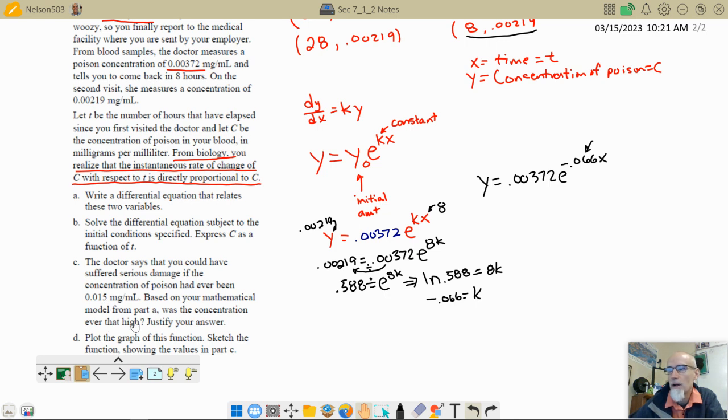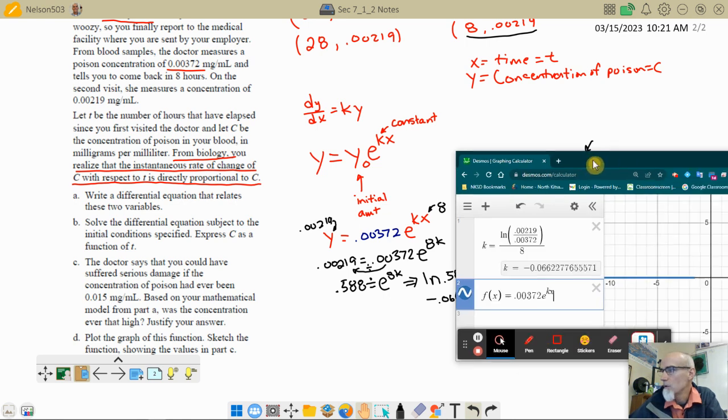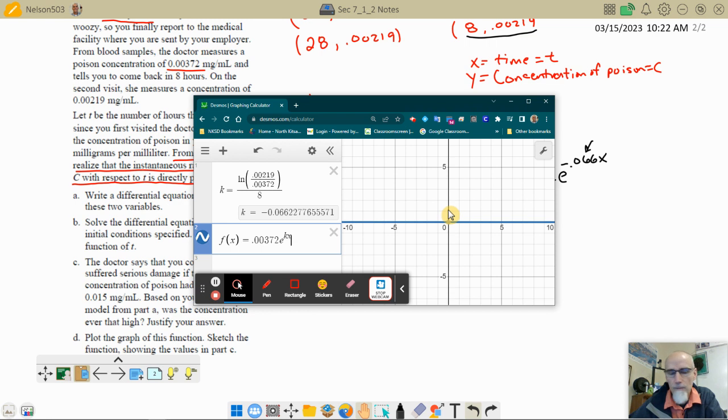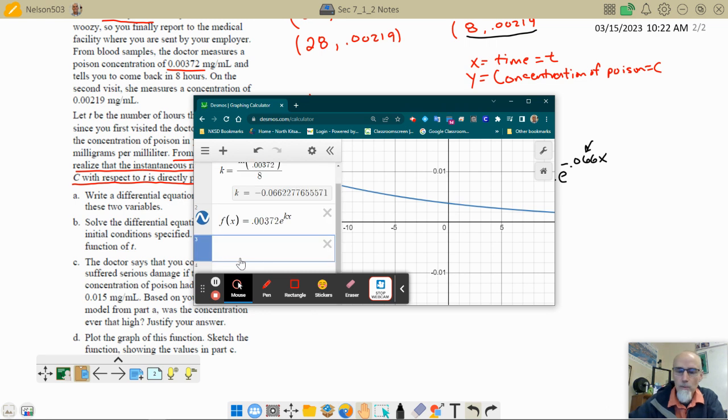We could graph it now, and we could graph 0.015, and we could see, so here we are on our graph, I probably need to zoom in on my axis a little bit here, okay, and we could type in 0.015 for a horizontal line, y equals, y equals, and we could see, oh, the concentration level.